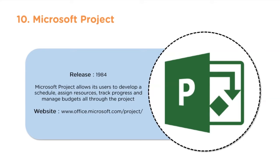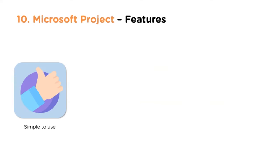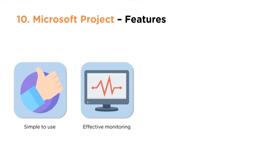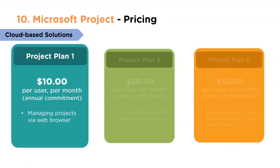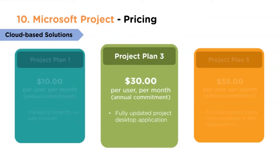Microsoft Project was released in 1984. It allows users to develop schedules, assign resources, track progress, and manage budgets throughout the project. The website is www.office.microsoft.com/project. Features include simplicity, effective monitoring, easy communication, and enhanced decision making. It is cloud-based. Project Plan 1 costs $10 per user per month annually for managing projects via web browser. Project Plan 3 costs $30 per user per month annually with a fully updated desktop application.